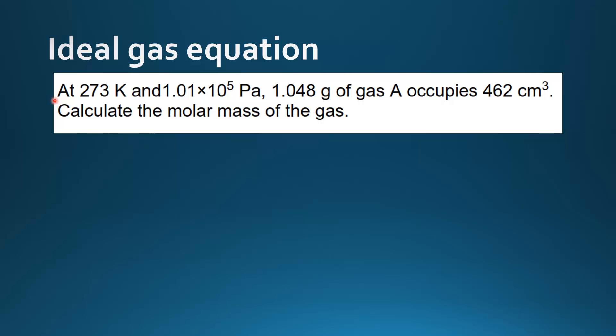Next we'll try an example. At 273 kelvin and 1.01 times 10 to the 5 pascals, 1.048 grams of gas A occupies 462 centimeters cubed. Calculate the molar mass of the gas.